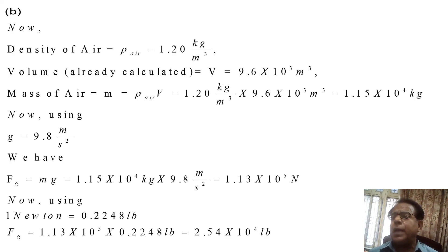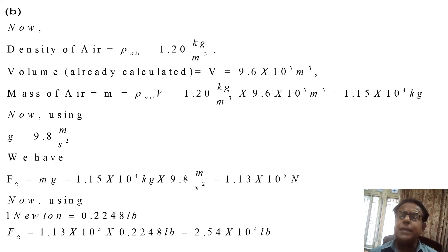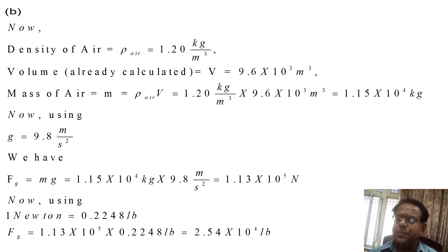This gives a mass equal to 1.15 × 10⁴ kilograms. Now using acceleration due to gravity g = 9.8 m/s², we calculate the gravitational force. The weight Fg becomes equal to 1.13 × 10⁵ Newtons.